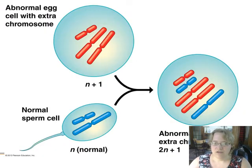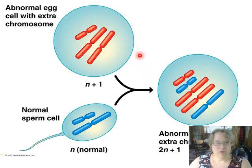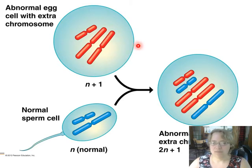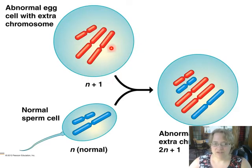With pretty much no monosomies — where you only have one chromosome — surviving, only trisomies with the extra chromosome are survivable events.